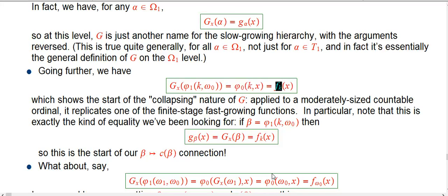And guess what? That's phi naught of k comma x. We've traditionally called that f sub k of x. It's the fast growing hierarchy. So what do we have here?